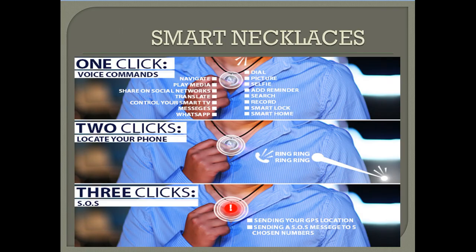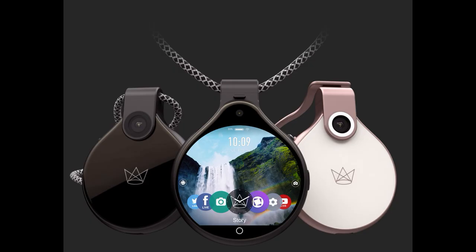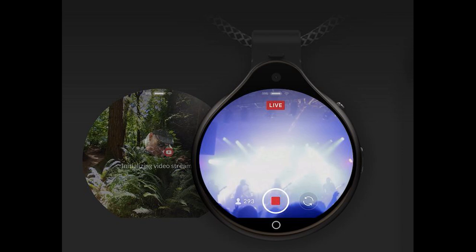The second type of wearable technology is smart wearable necklaces. These wearable necklaces allow us to give voice commands, locate our phones, play media, send and receive messages, share anything on social networks. We can use even WhatsApp, add reminders, record videos, take pictures, and many more.